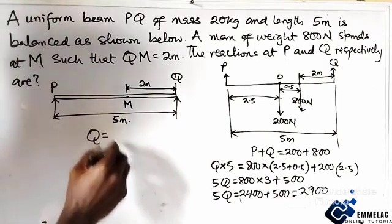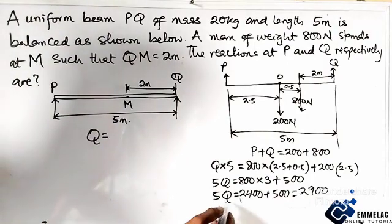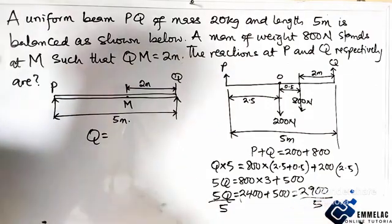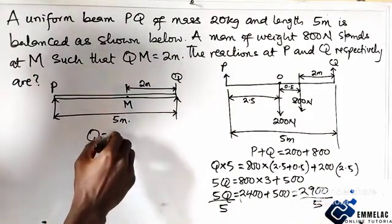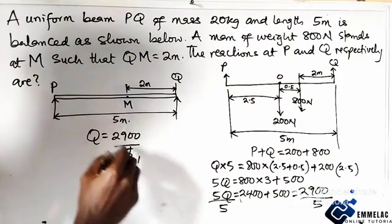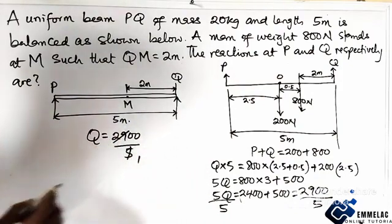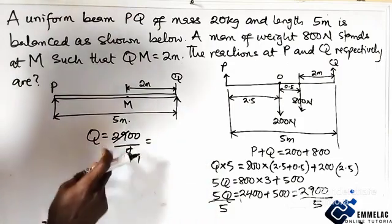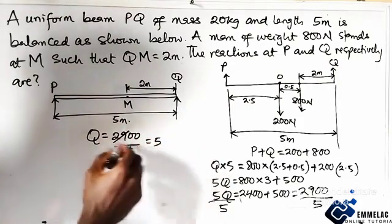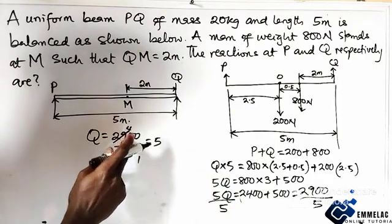So here you can now see that Q equals dividing both sides by 5. Here we have 2,900 divided by 5.